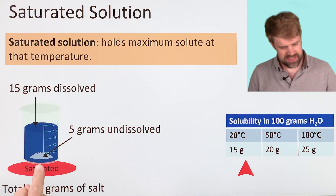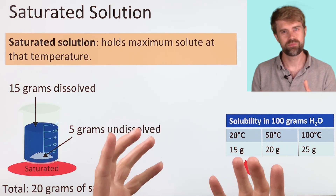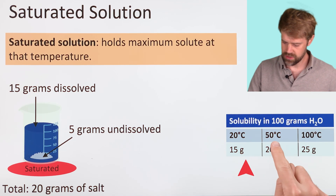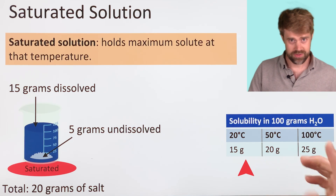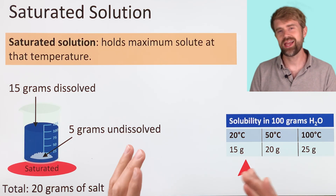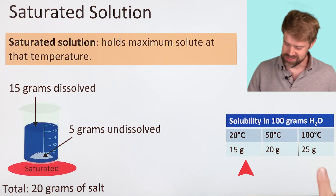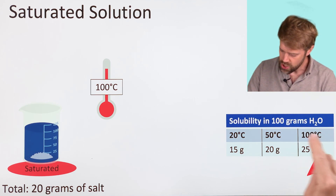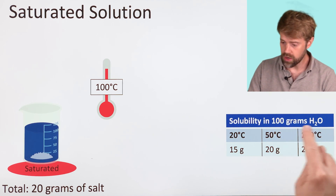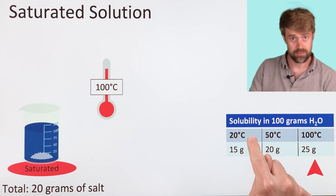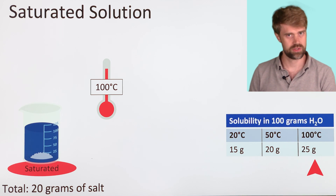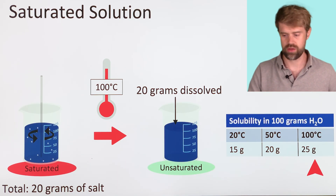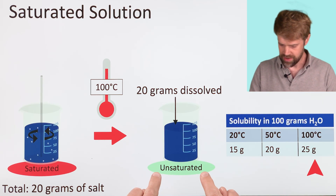Is there any way to get this extra salt to dissolve? One way would be to raise the temperature. Solubility is linked to temperature, and we can see from our solubility chart that solubility increases with temperature. Let's say we raise the temperature to 100 degrees Celsius. At 100 degrees Celsius, the solubility of our salt becomes 25 grams per 100 grams of water — it was 15 at 20 degrees, but now it's 25 grams at 100 degrees. So if we heat the solution up to 100 degrees Celsius, that extra 5 grams dissolves because the solution is unsaturated at this higher temperature.